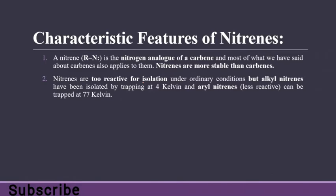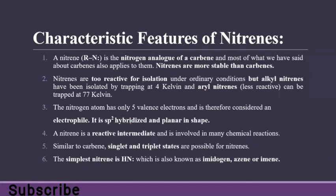It is not possible to isolate nitrines during a reaction under normal conditions — you need extraordinary conditions to isolate them. Alkyl nitrines are trapped at 4 Kelvin and aryl nitrines at 77 Kelvin. These are the isolation temperatures. The nitrogen atom has only five valence electrons and is therefore considered an electrophile. It is sp2 hybridized and planar in shape.